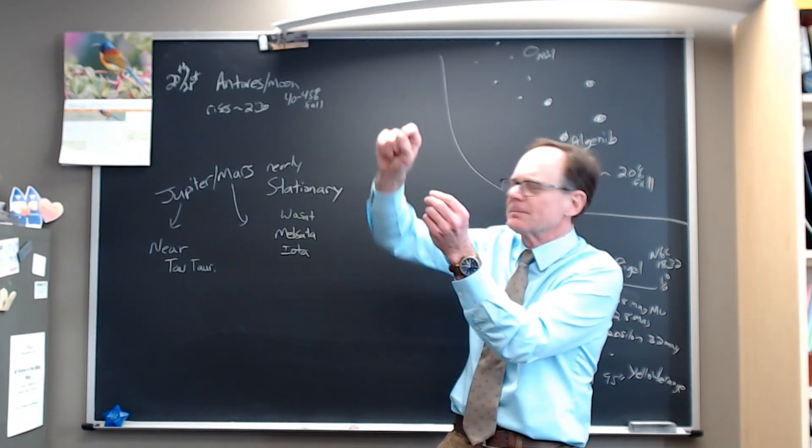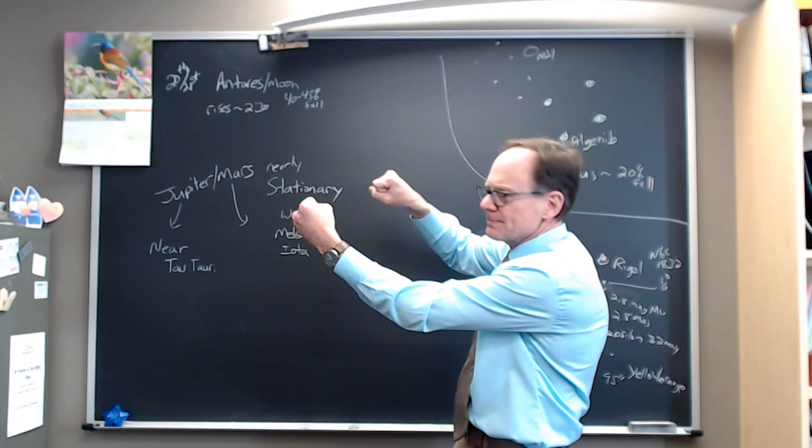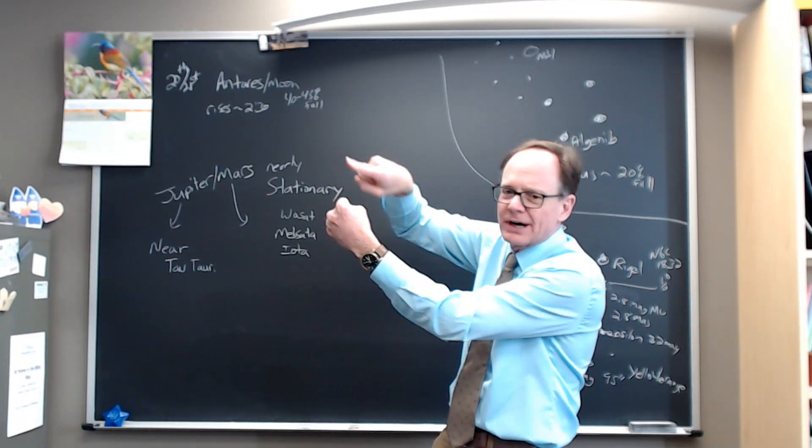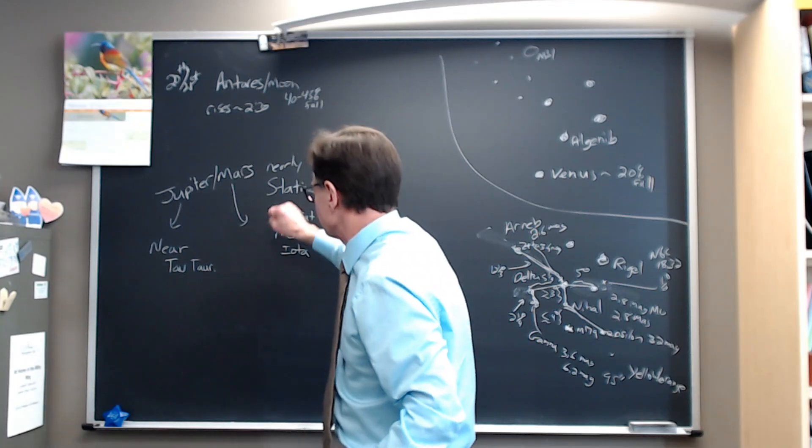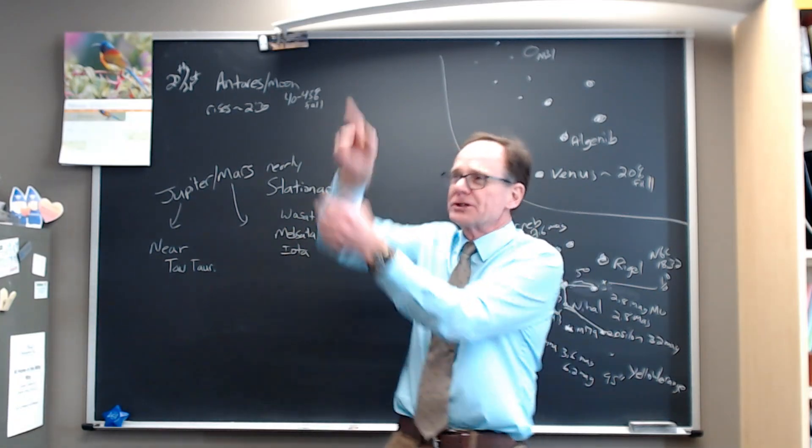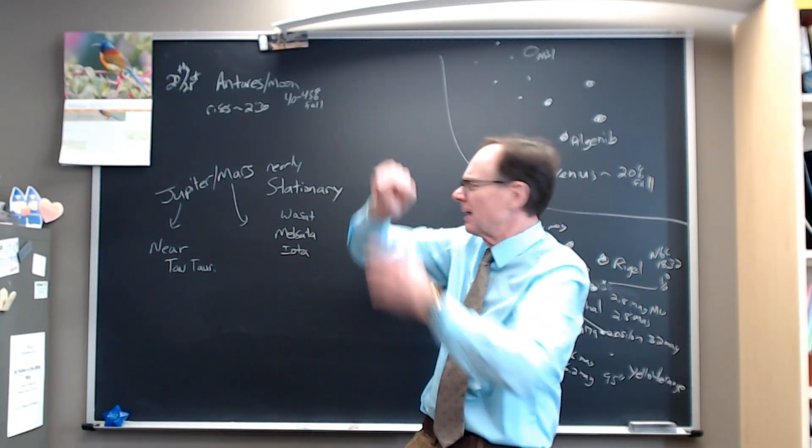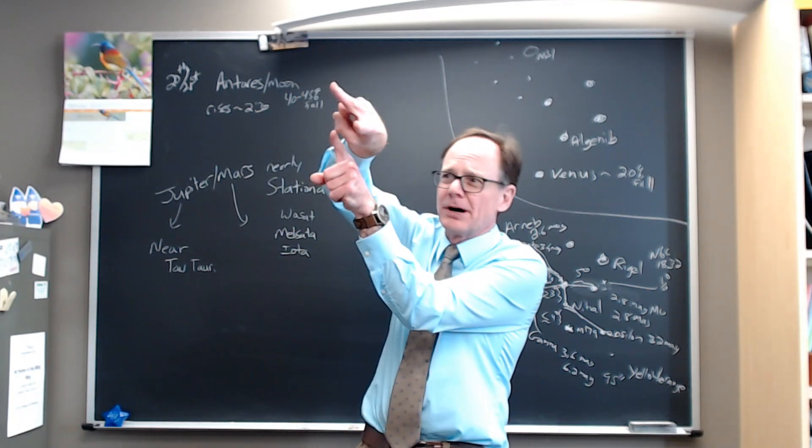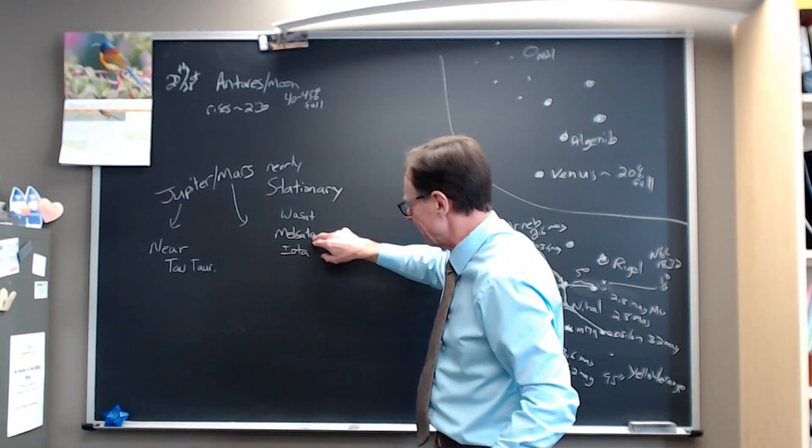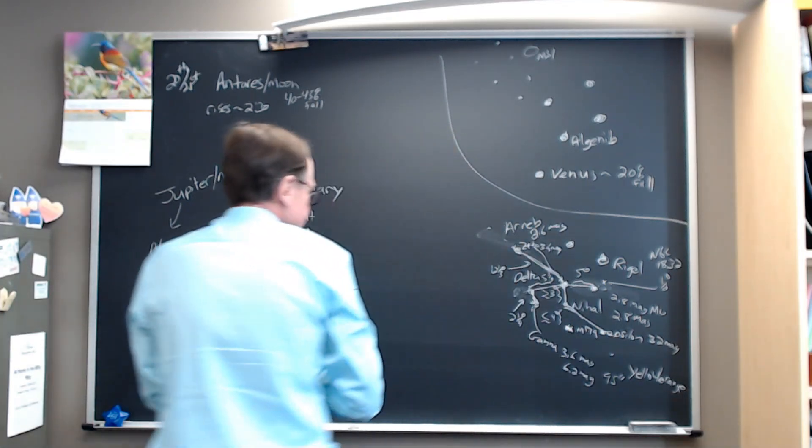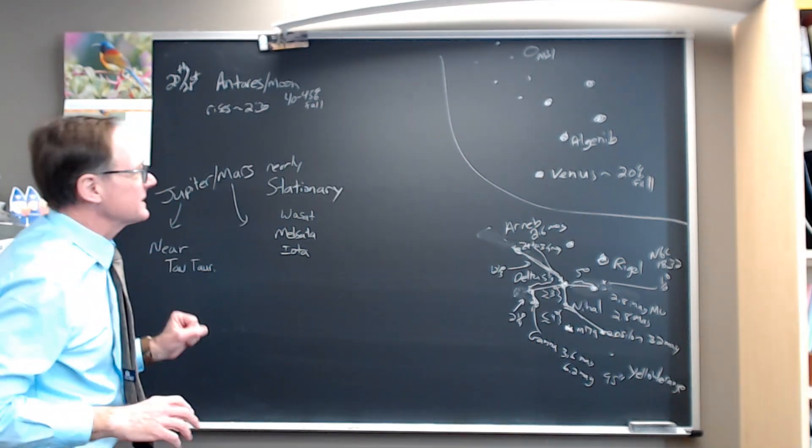Iota is the fainter star that's above it, and it's got Wasat and Mebsuta on either side of it. So you see a triangle of stars right there with bright orange Mars right in the middle of that triangle. And the two bright stars, Castor and Pollux are above there, of course. So you see Castor, Pollux and Mars make one triangle and then Mars sits in the triangle of fainter stars Iota, Mebsuta and Wasat.